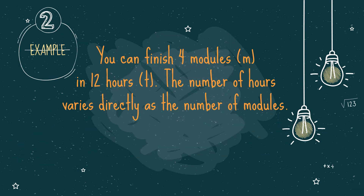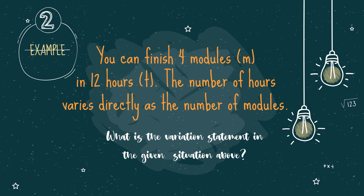Another example — example number 2: you can finish 4 modules in 12 hours. The number of hours varies directly as the number of modules. What is the variation statement in the given situation above? The variation statement is T varies directly as M, where T represents the 12 hours and M represents the number of modules.